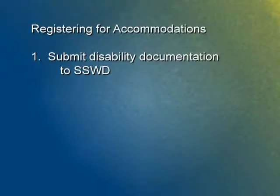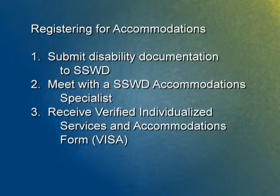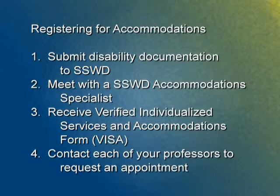First, show Services for Students with Disabilities your disability documentation. Then you should meet with an accommodation specialist who has reviewed the documentation and other relevant information. Next, you should receive a verified individualized service and accommodations form, also known as a VISA — a written record of your accommodations recommended by an accommodation specialist. And finally, you should contact your professor to request an appointment to discuss your accommodations.